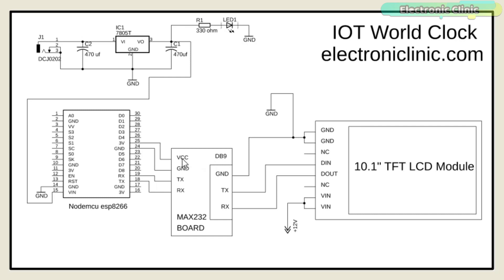The VCC pin of the Max232 board is connected with the 3.3V pin of the NodeMCU module. Note that when using Arduino I connected the Max232 VCC to 5V, but since the NodeMCU ESP8266 Wi-Fi module is a 3.3V controller, make sure you connect the Max232 VCC pin to 3.3V. The ground of the Max232 is connected with the NodeMCU ground, while the TX and RX pins of the Max232 board are connected with the NodeMCU ESP8266 RX and TX pins respectively.